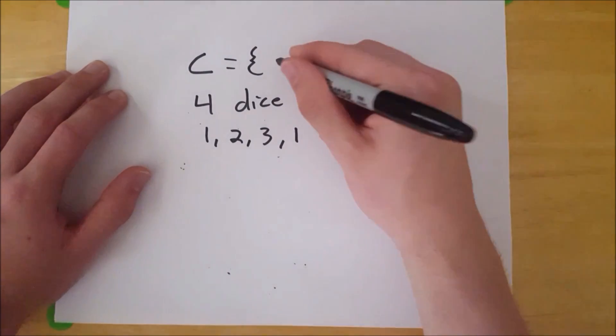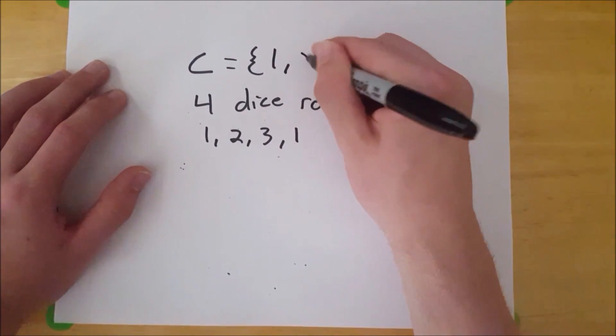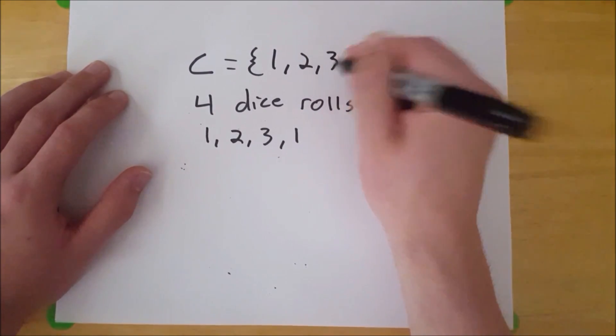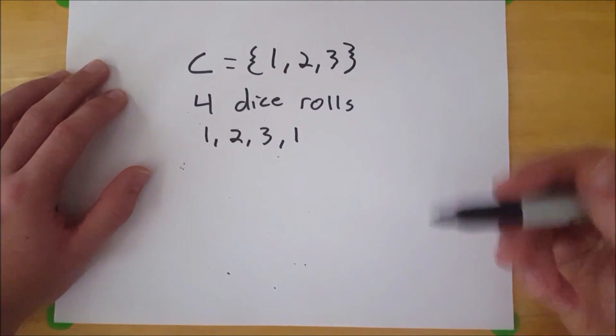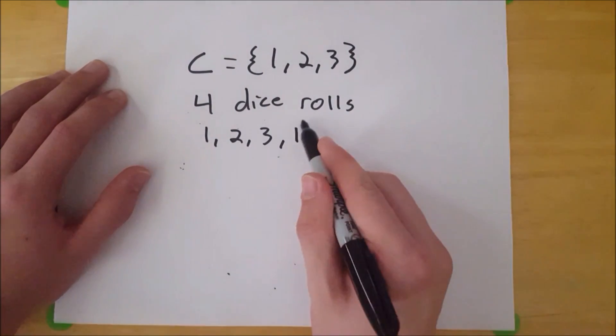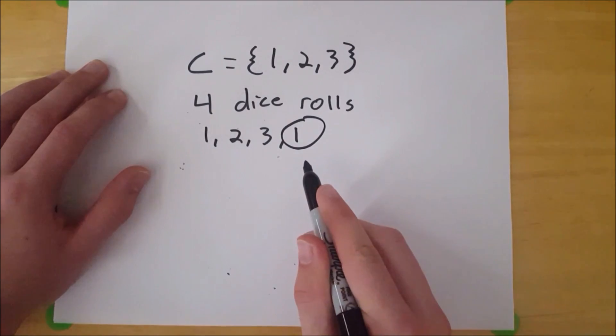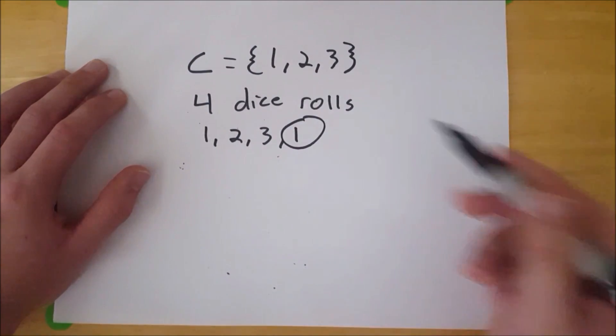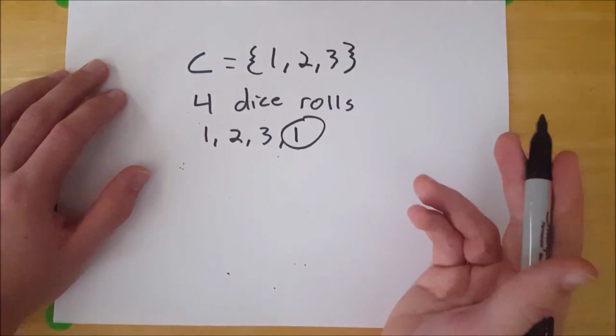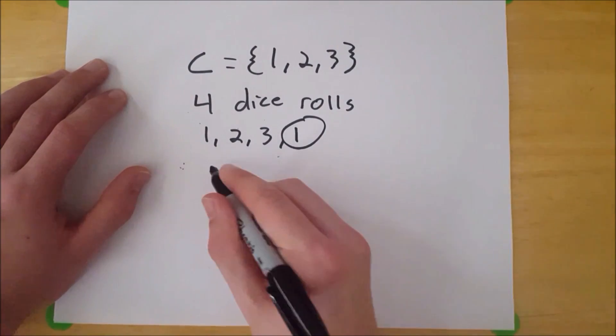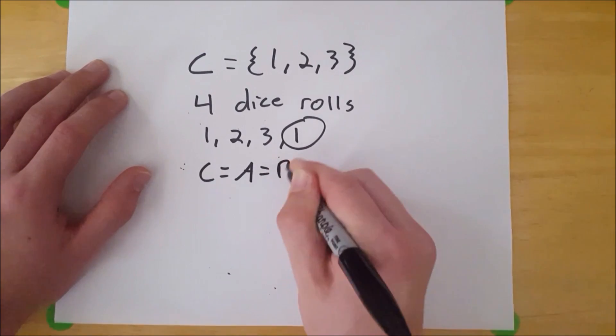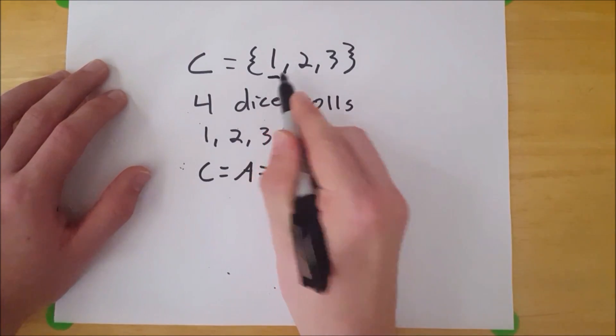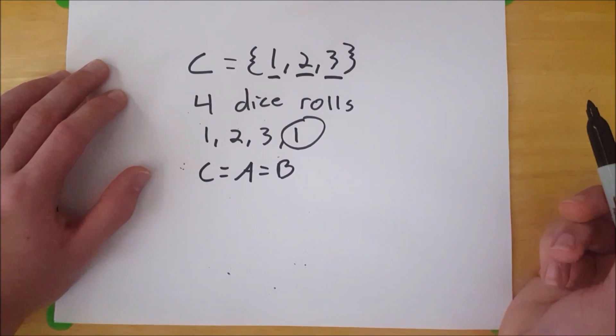So what's going to be in set C? Well, first, there's going to be one, then we're going to have two, and then we're going to have three. And that's it, because only distinct elements go in the set. So you don't have to include that one an additional time. So C is equal to the set that contains one, two, three. Therefore, we can say that C equals A, which is equal to B, because they all have one, two, three, and nothing more in them.